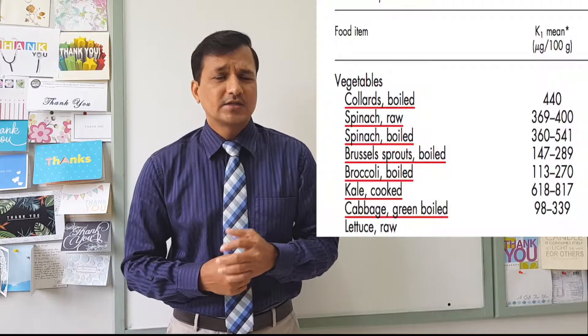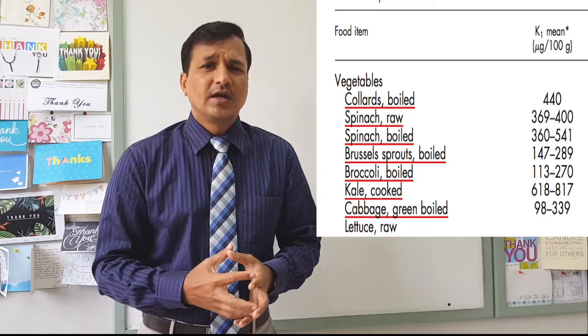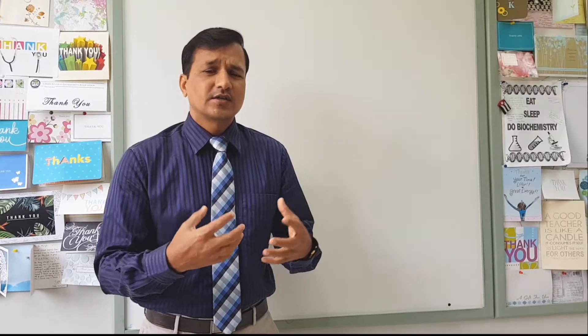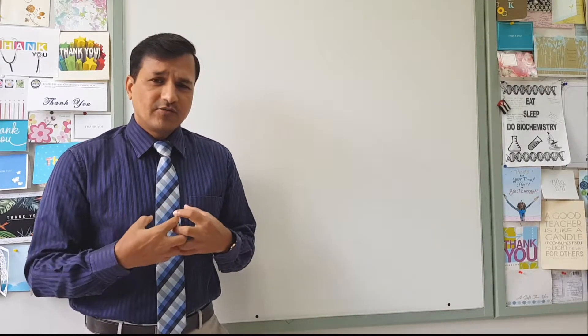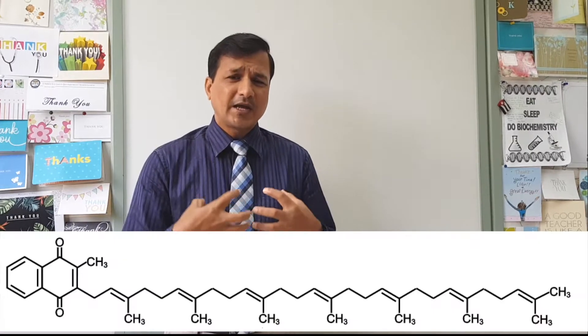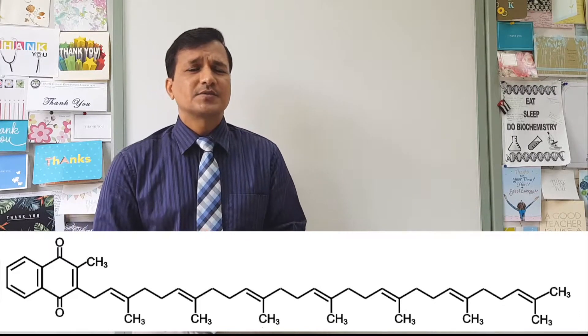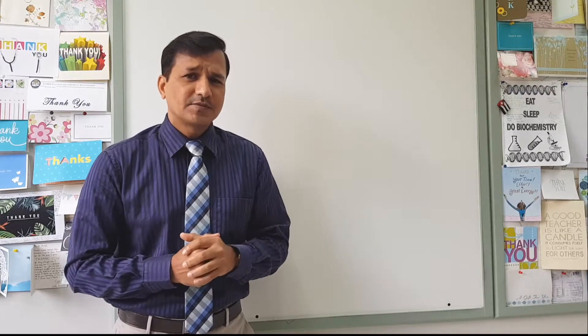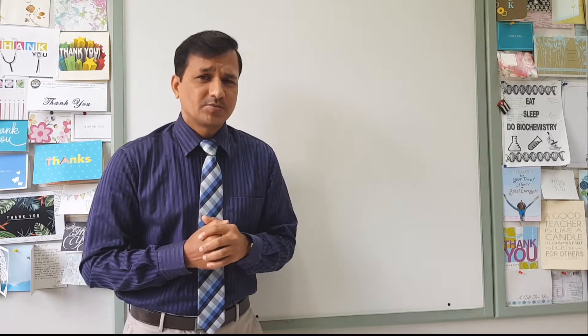The more green the vegetable, the higher the content of phylloquinone, because phylloquinone is in association with chlorophyll. Once we consume green vegetables, phylloquinone is absorbed along with lipids and becomes part of chylomicrons. Menaquinones come from animal-derived fat like cheese or fermented foods. The bacteria present in our intestine also produce different types of menaquinones - specifically bacteroides species and bifidobacterium, which are around 50% of anaerobic bacteria in our colon.